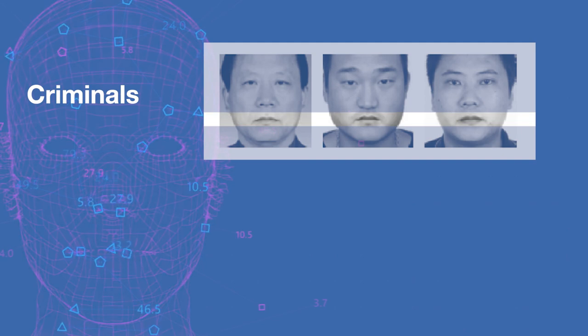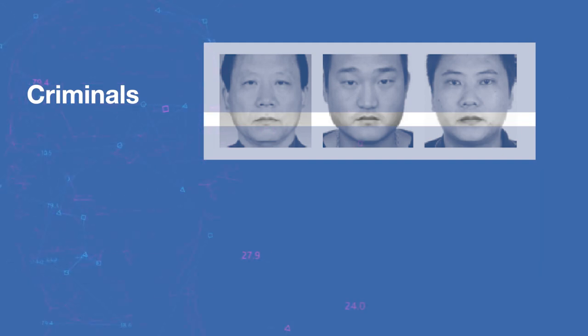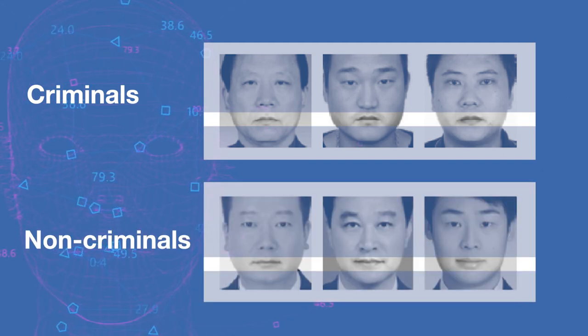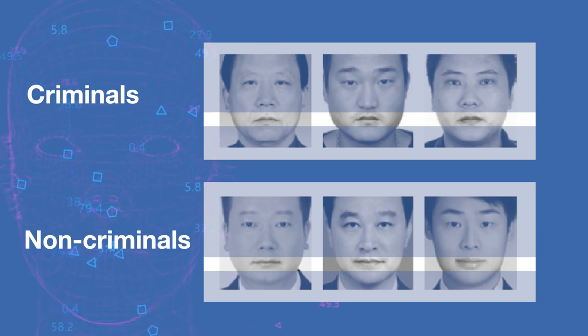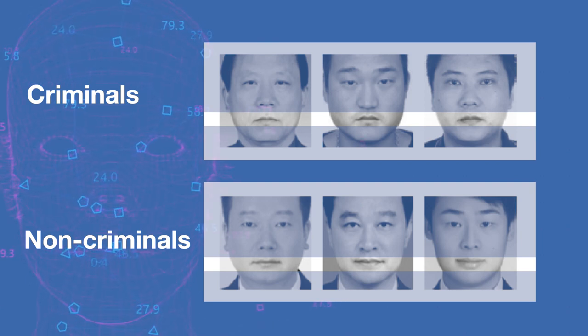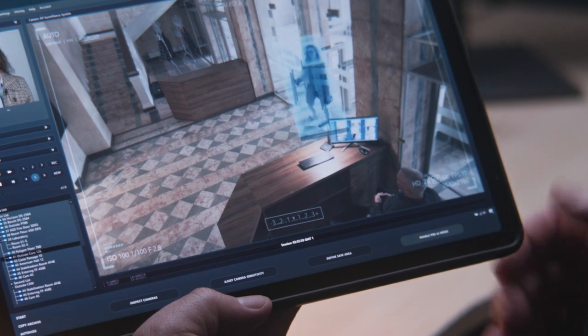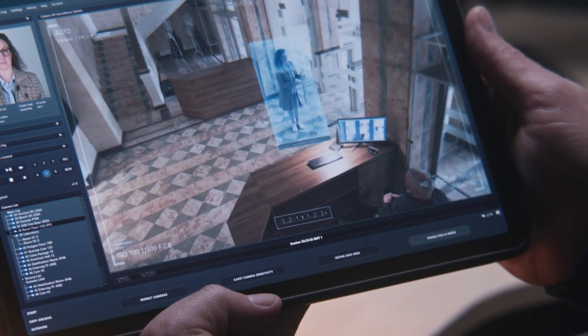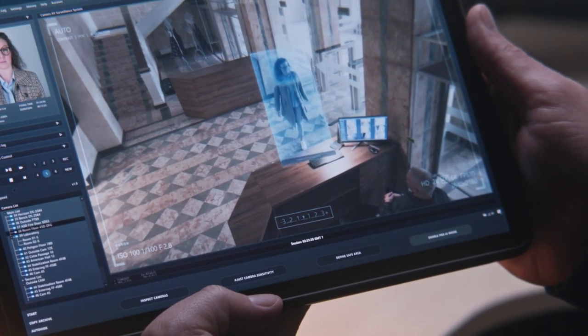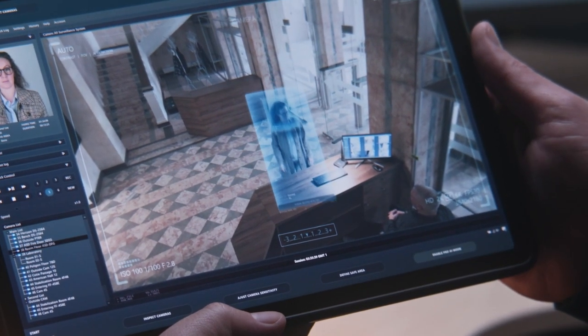In this case, the first bias is the key one. None of the criminals are smiling, while the non-criminals are. Wu and Zhang actually ended up building a smile detector. So the next time you get caught on CCTV, remember to smile and look your best.